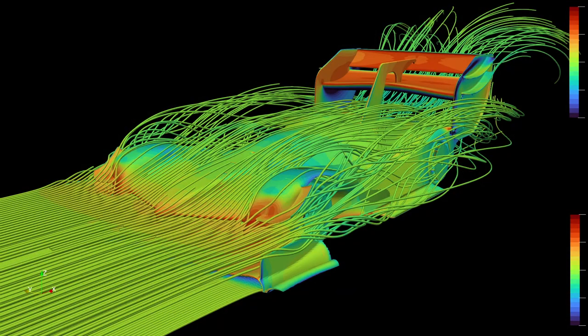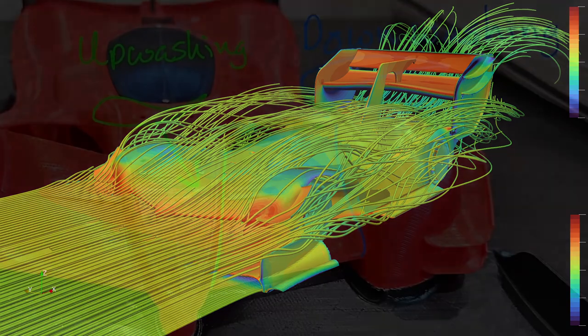From this render you can see just how complex and interconnected the flows around the nose of the car are. To try to make this easier to understand, I want to break down each part of the nose individually first before discussing how they all work together.